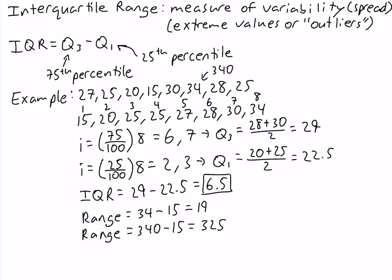So with an outlier in the data, the range went up from 19 to 325. The interquartile range of the original data was 6.5. In the new data set where 34 becomes 340, the interquartile range is still 6.5.